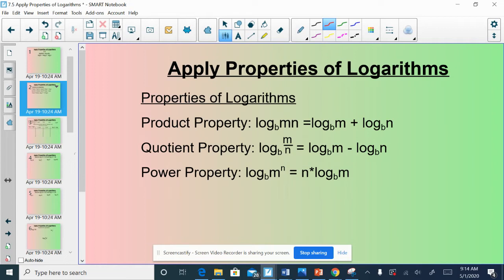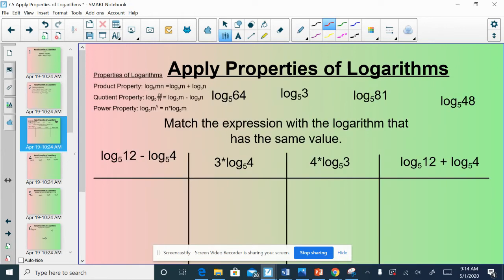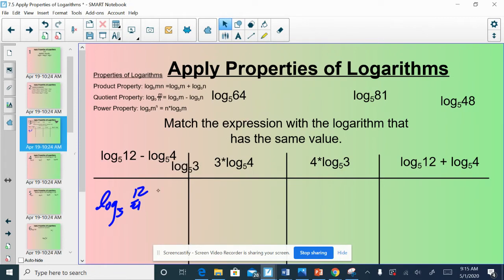Let's take a look at some examples. I have a little matching game. If we had log base 5 of 12 minus log base 5 of 4, my hope is that you guys could see, okay, they have the same base, base 5, and they're being subtracted. I could condense those and divide them instead. Because when you subtract and they're separate, you can combine them using division. So, it would be log base 5 of 12 over 4. We know that 12 over 4 is 3, meaning this guy goes over here.